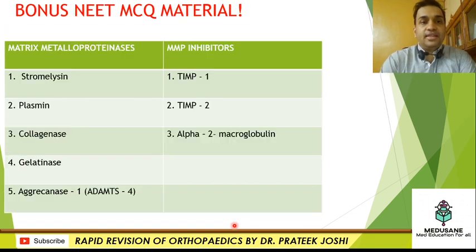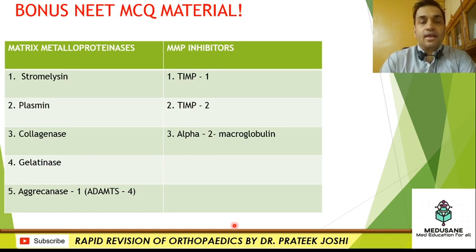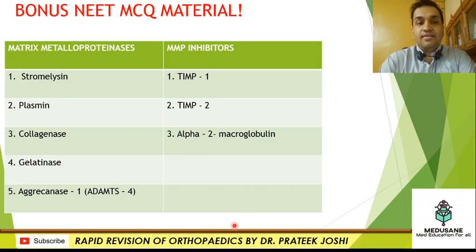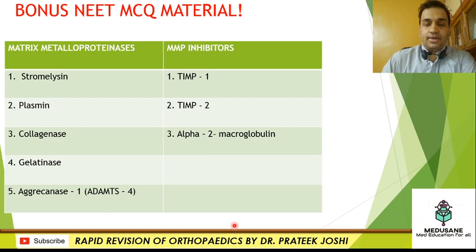As a bonus MCQ material: the matrix metalloproteinases involved in osteoarthritis are stromelysin, plasmin, collagenase, gelatinase, and aggrecanase-1. The inhibitors of these enzymes are tissue inhibitor of metalloproteinase-1 (TIMP-1), TIMP-2, and alpha-2-microglobulin. These are very useful in all-except type MCQ questions, so please take note of them.